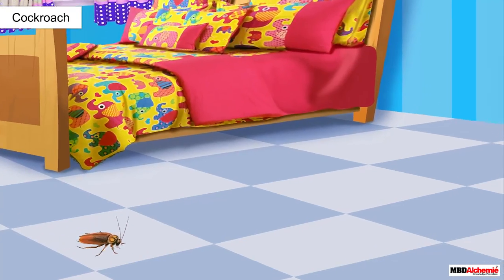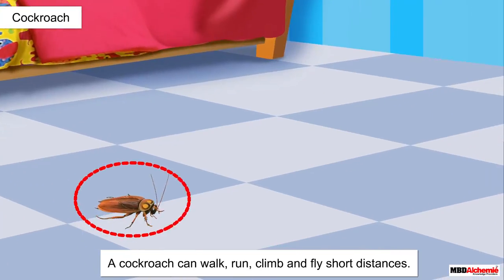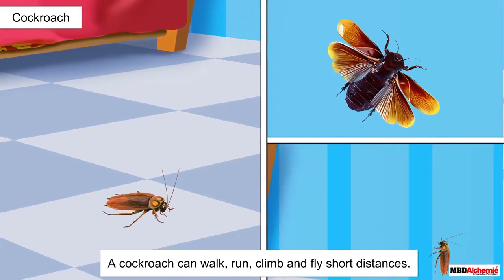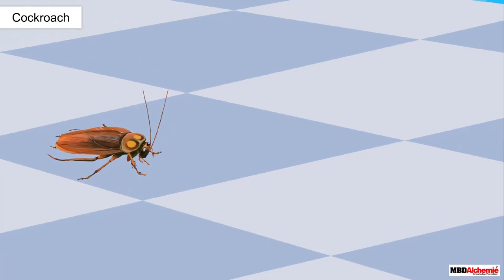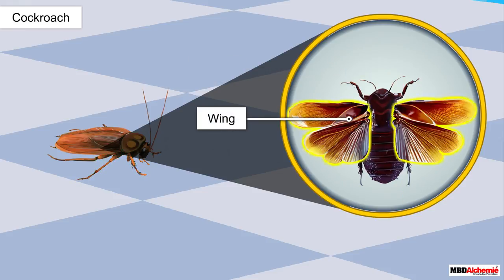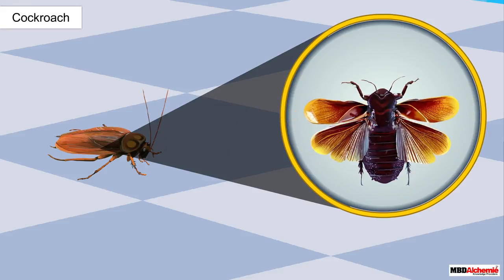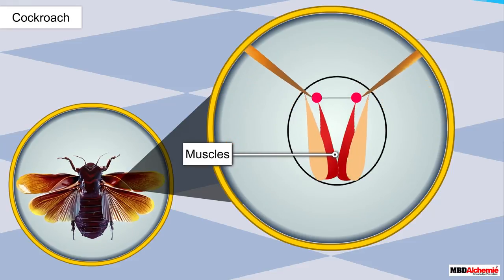Let us now look at the movements of a cockroach. A cockroach can walk, run, climb, and fly short distances. A cockroach has three pairs of legs that help it in walking. The cockroach has distinct muscles near the legs that help it in walking. It has two pairs of wings attached to its breast region. The cockroach has muscles near the wings, and these muscles move when the cockroach flies.